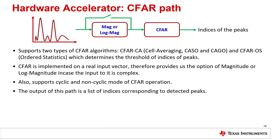The CFAR path — CFAR, or constant false alarm rate, is used to detect objects in a single dimension, either range or Doppler, taking into consideration clutter, interference, and noise. The CFAR path supports various types of CFAR algorithms including CFAR-CA, CASO, CAGO, and CFAR-OS. As CFAR is to be implemented on a real input vector, it gives the option of magnitude or log magnitude operation in case the input is complex. Cyclic and non-cyclic modes of CFAR operation are supported, with the output being a list of indices corresponding to the peaks of objects detected.